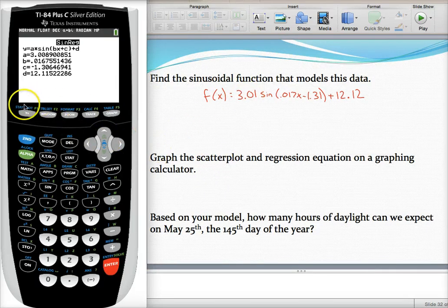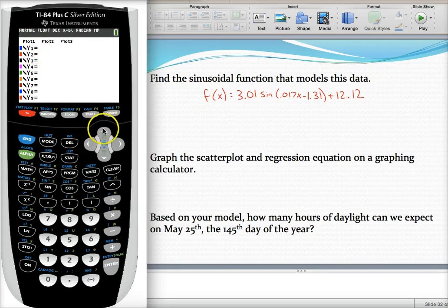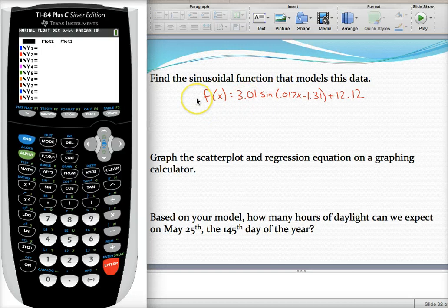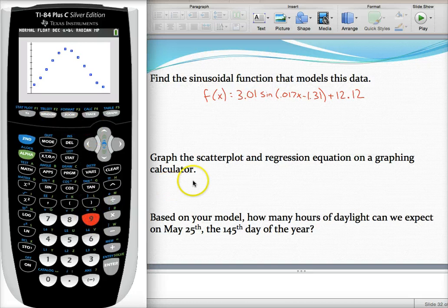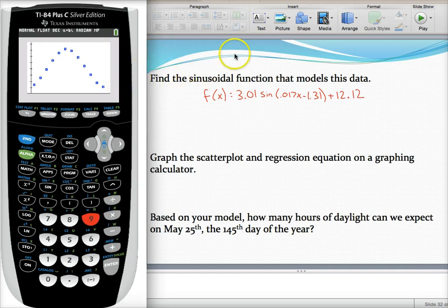First of all, the easiest way to see your scatterplot is to press Y equals. Go up to plot 1 and press enter to turn that on, and then make sure there's nothing else typed in down here. So I will now see my scatterplot, except my window needs to be adjusted. Luckily, our calculator can make us a perfect window. Press zoom, and then option 9 is zoom stat. As long as your scatterplot is turned on, select option 9, and you should automatically see this window pop up, where we see the days get longer, and then the days get shorter, and then this wave would continue forever in both directions.